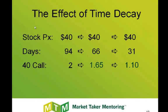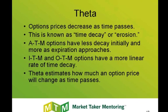We're talking about theta. Option prices decrease in value as time passes, and it makes sense. Given a call — if you have the right to buy the stock at $40 — would you rather own that right for two years or two days? Clearly, if there's more time in the life of the option, it's of greater value. So as time passes, options get worth less. This is known as time decay or erosion.